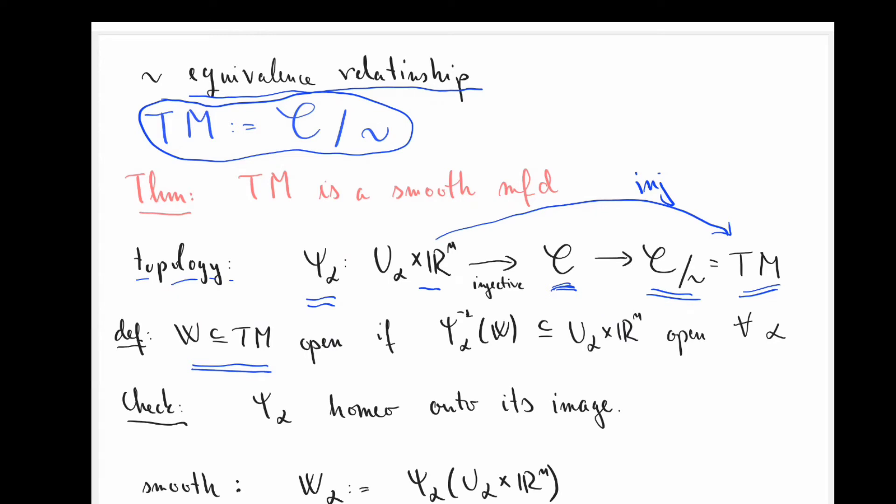Here, a subset of the tangent bundle should be open if all its pre-images under the psi alpha are open subsets of this direct product, which is a subset of r2n. In other words, the topology I take on TM is the push-forward topology of these maps psi alpha. Somehow it's the coarsest topology making all the psi alphas continuous.